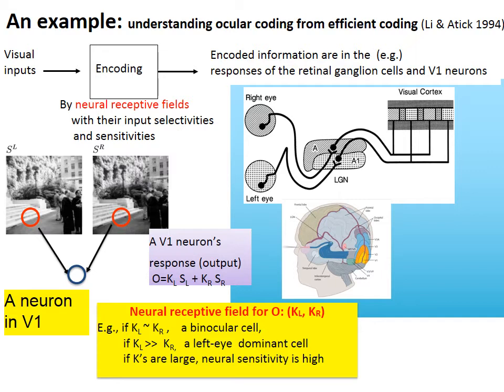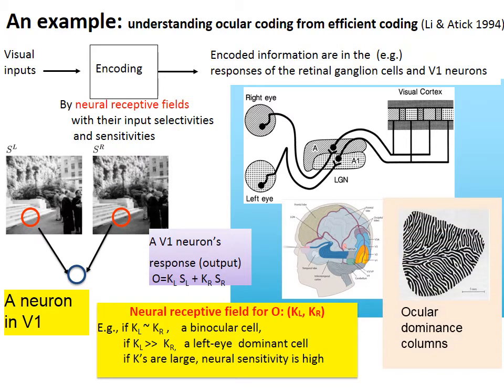When we look at many neurons in V1, we can visualize their ocular dominance properties through an image of the V1 surface. Each point in black or white denotes whether the neurons around that surface location prefer inputs from the left eye or from the right eye. The black and white stripes are called ocular dominance columns. We can ask whether these ocular coding properties, in terms of KL and KR for many neurons, can be derived and understood from the efficient coding principle.